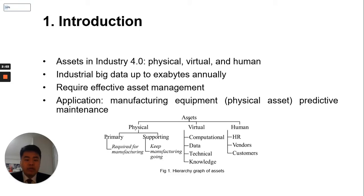Assets refer to all resources with economic values owned by the business. Physical assets are real projects including primary assets — key equipment for the manufacturing process — and supporting assets to keep manufacturing going. Virtual assets include computational, data, technical, and knowledge assets. Human assets include HR, vendors, and customers. These assets generate up to exabytes of data volume per year through industrial sensors. Therefore, they require an effective resource management technique. With the huge amount of industrial data, how can we utilize them in Industry 4.0? One application is to predict the health condition of manufacturing equipment.